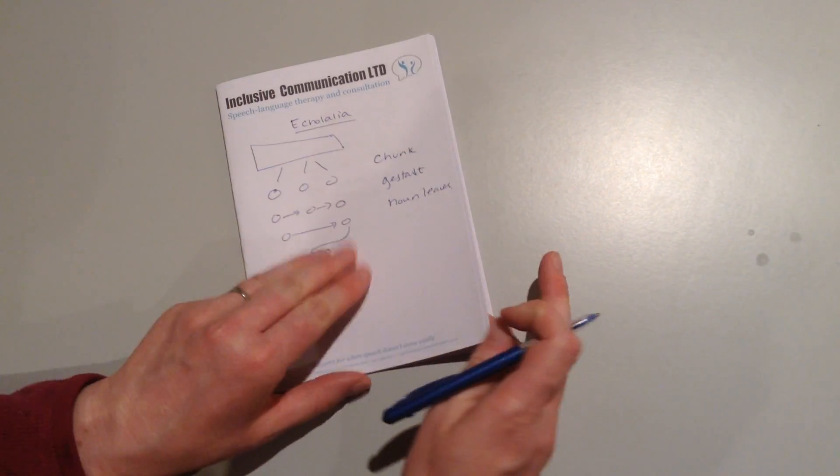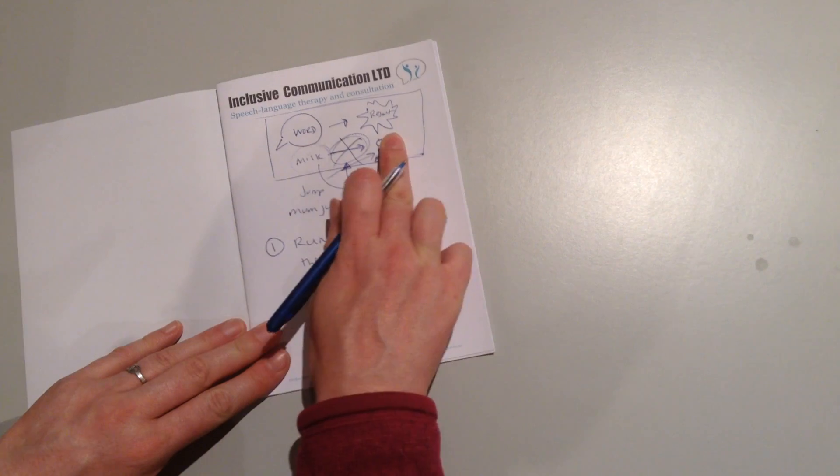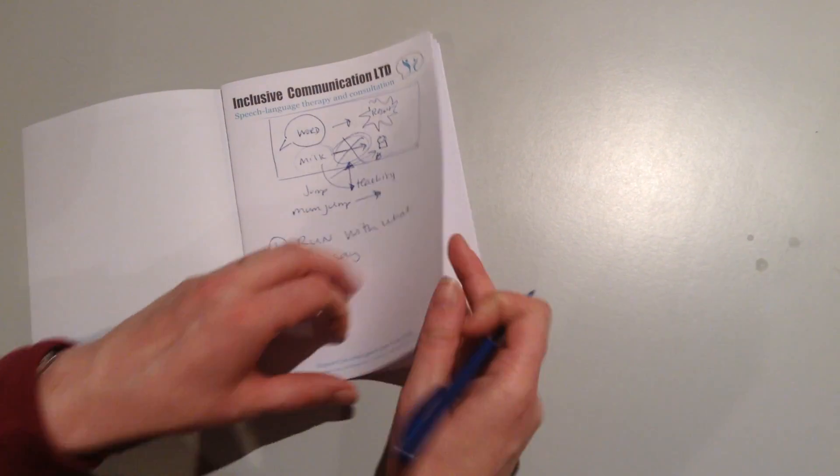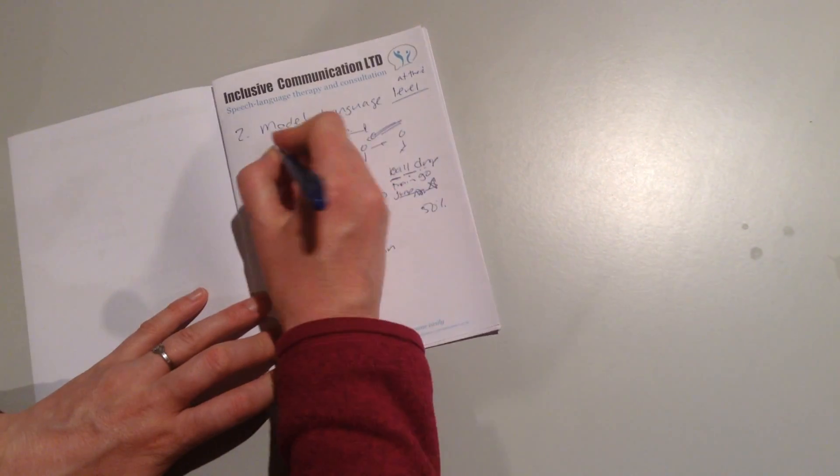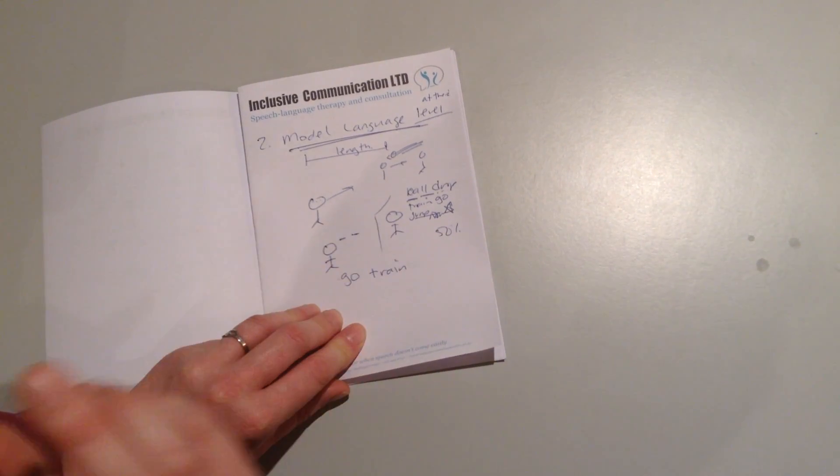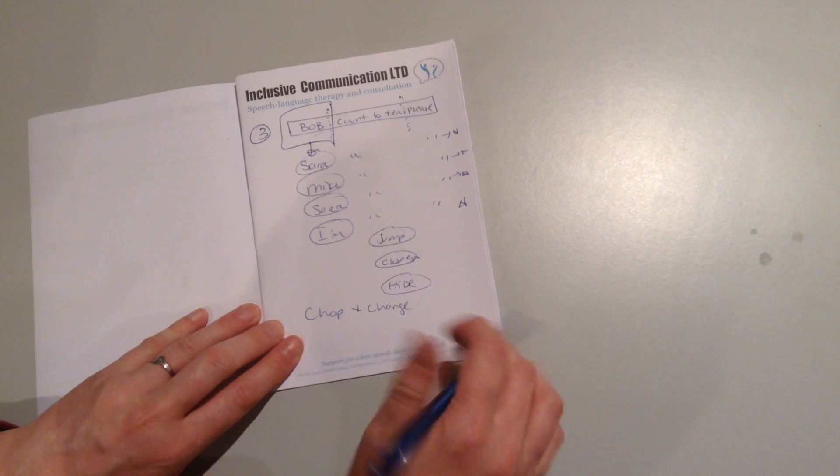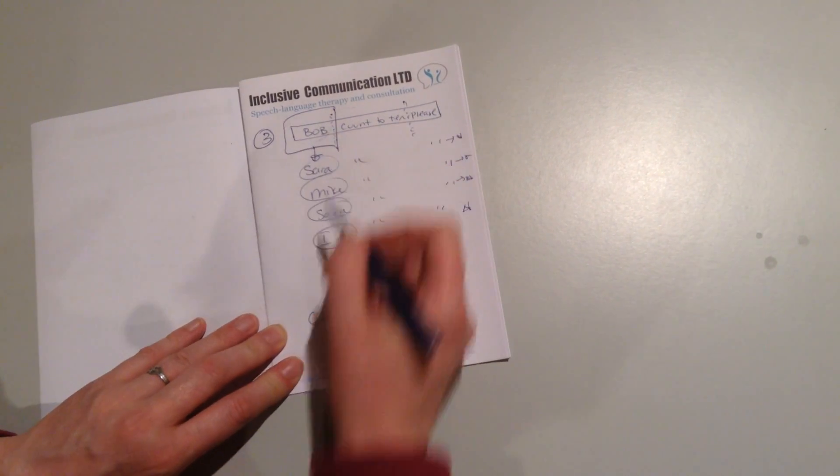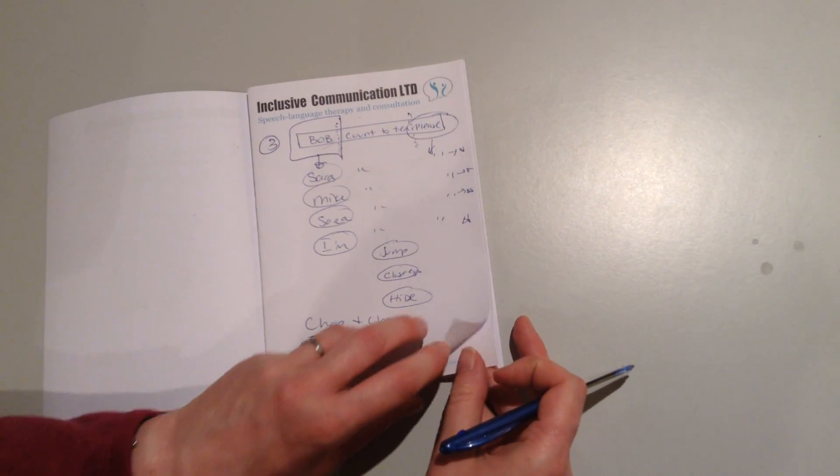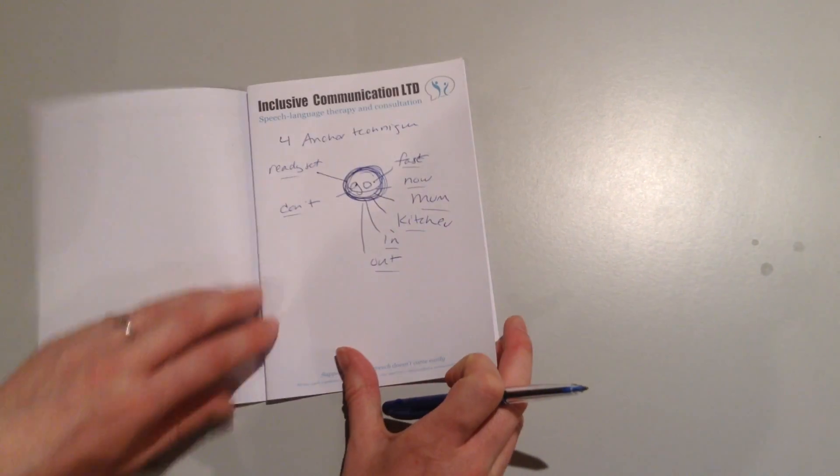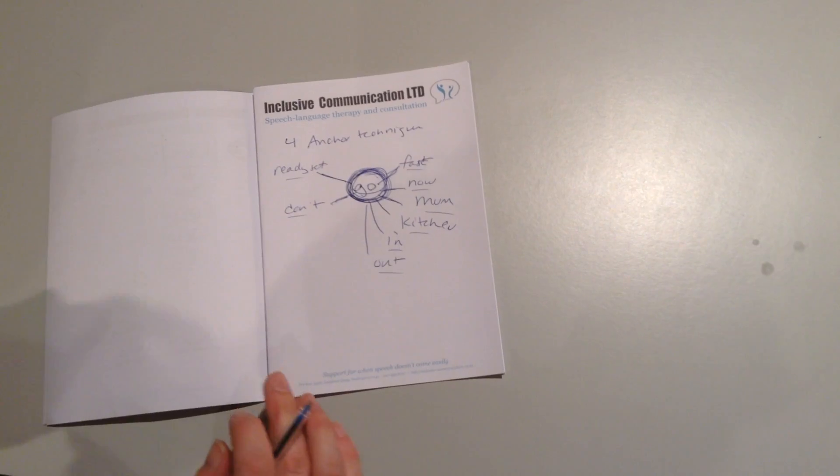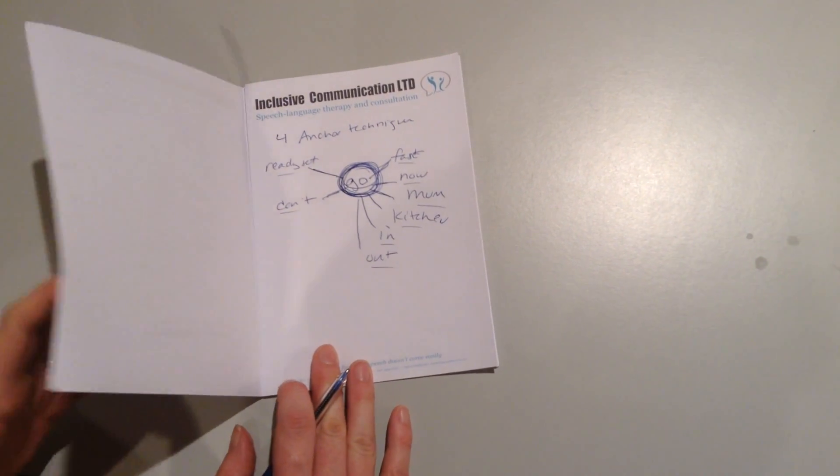Just to recap, when we have echolalia, make sure they have a real clear link between the word or phrase and the result. Make sure we're modeling language at their level so they have language they can hear, process, repeat, and basically steal from us. When they use nice big chunks, chop and change - pick one section you're going to change so they can get two or three examples. And last but not least, if they're using a single word, make sure we model and practice some different words that can lead in or lead out from that word. Thanks so much. Bye.